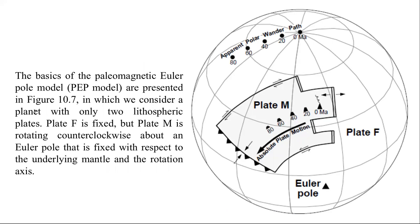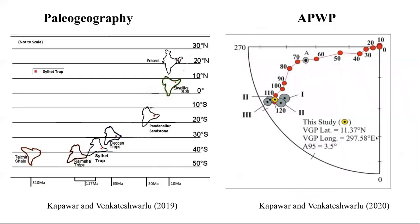The basics of the paleomagnetic Euler pole: in Euler pole studies, two plates are considered — one fixed and one moving. In the figure, plate F is fixed and plate M is free to wander, marking the apparent polar wander path for plate M. Vice versa, plate M can be kept stationary while plate F rotates. On the basis of this interchange of Euler poles, the apparent polar wander path can be constructed.